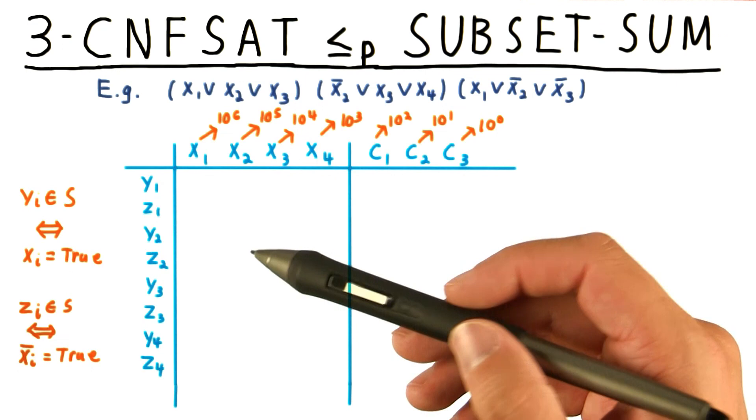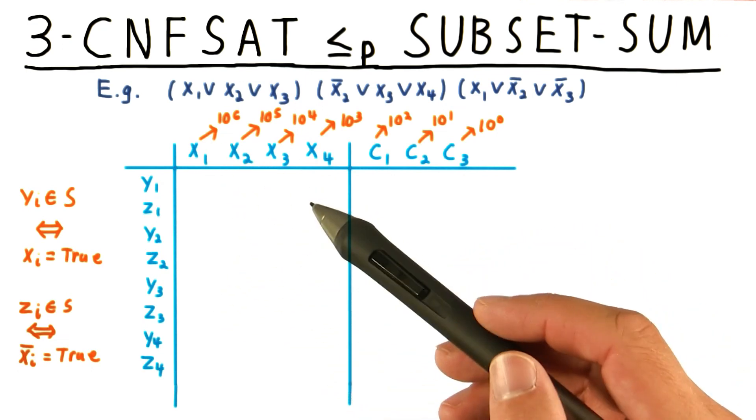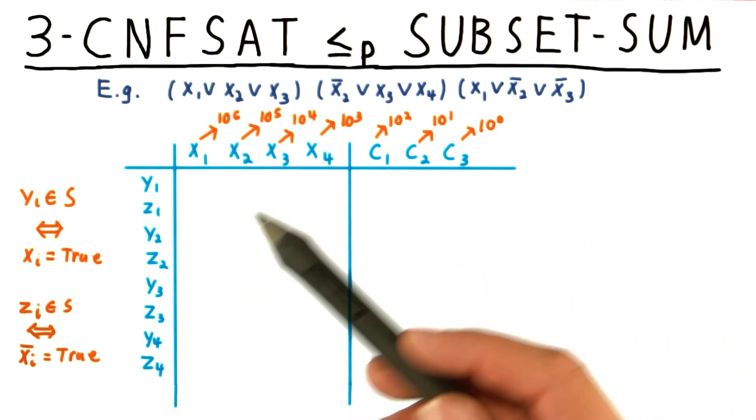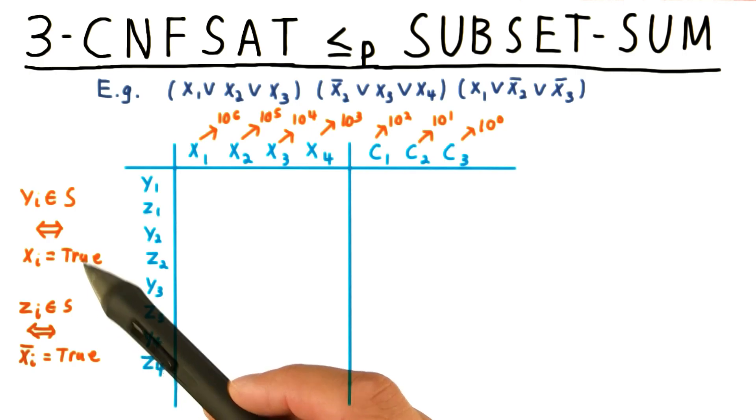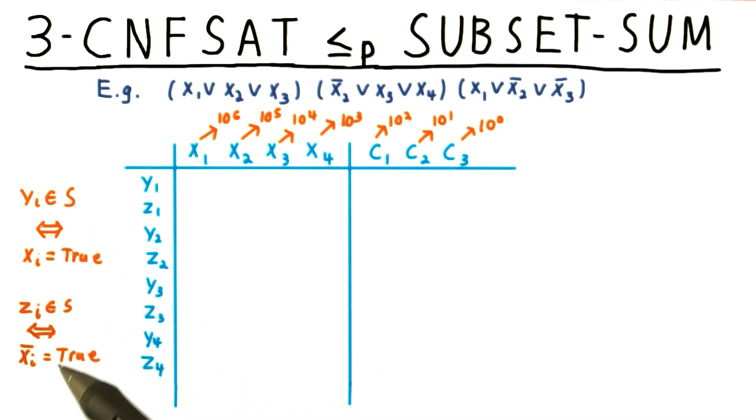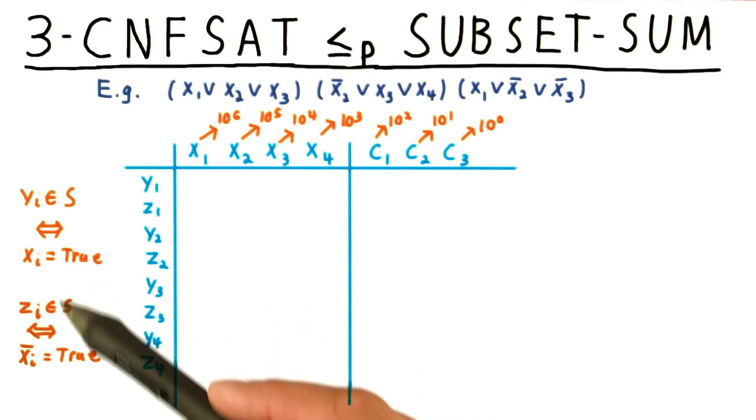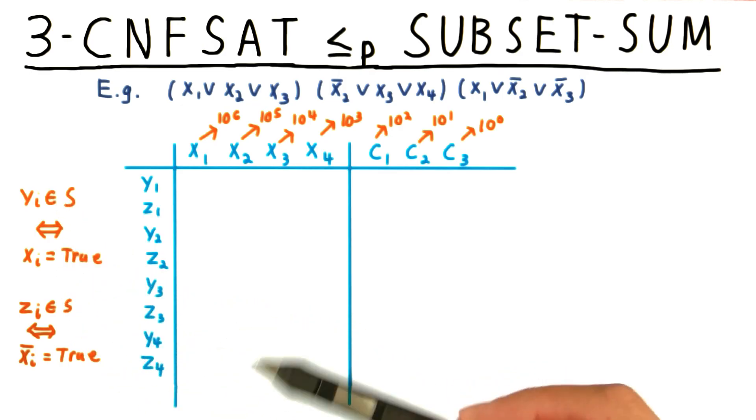The collection of numbers will consist of two for every variable in the formula. One that we include when xi is true, we'll notate that with yi. And one that we include when xi bar is true, we'll notate that with zi. In the end, we want to include either yi or zi for every i, since we have to assign the variable xi one way or another.